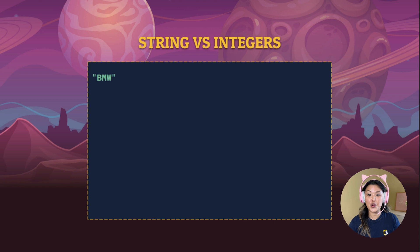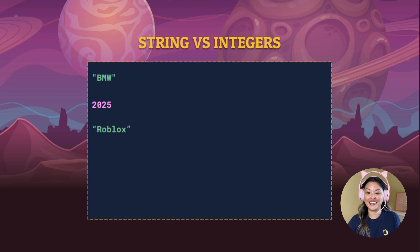Next, 2025 — what do you guys think, string or integer? Yes, we've got an integer here, right? No quotations, and it's a whole number. The next one, 'row blocks', inside of quotes — what do we got? A string. Very good, you guys are on it.